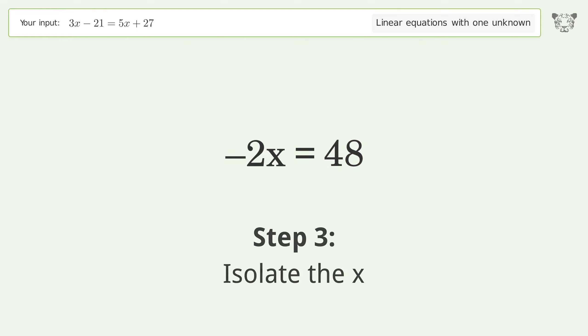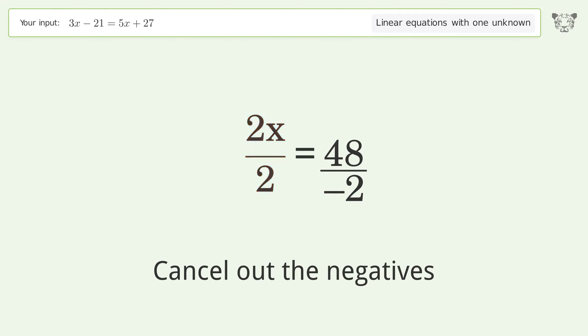Isolate the x. Divide both sides by negative 2. Cancel out the negatives. Simplify the fraction.